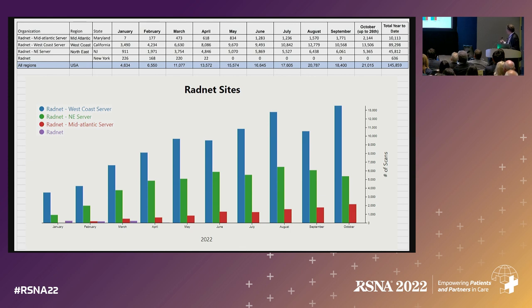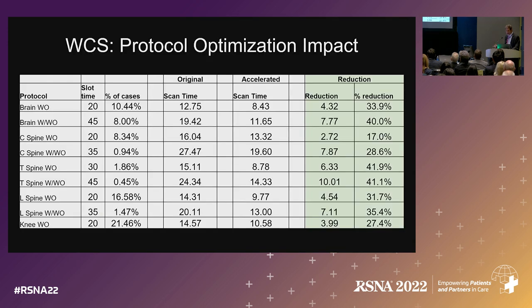Right now we're averaging about 21,000 exams processed per month across our national imaging network. You can see the number of minutes saved and the percentage saved.